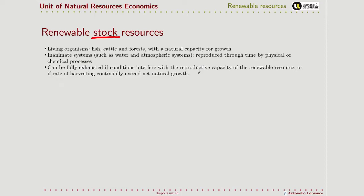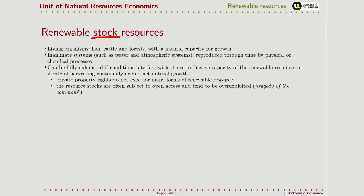If the usage of this resource interferes with the reproductive capacity of this kind of renewable resource — for example if the harvesting rate is excessive and continues for too long — the resource can become finally exhausted. The problem is that private property rights often don't exist for many of these renewable resources. This leads to a problem known in the literature as the tragedy of the commons, because the resource is subject to open access and tends to be overexploited — to a level of exploitation higher than what efficiency conditions would imply.